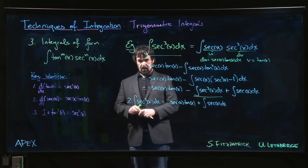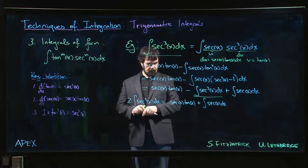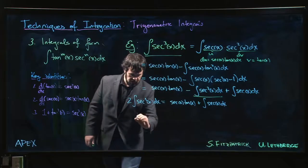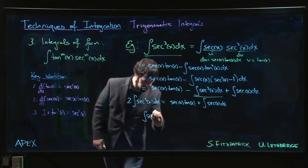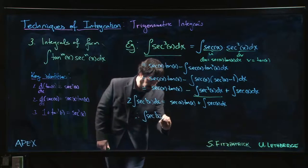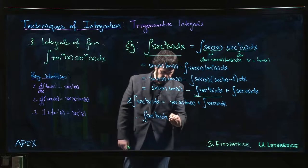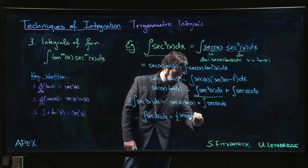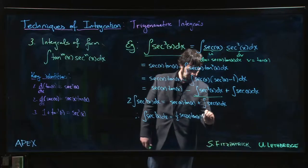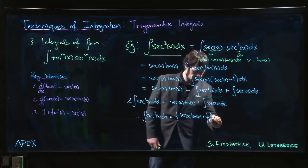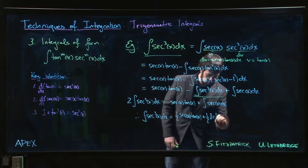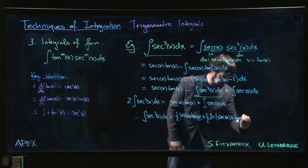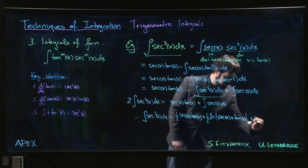We did that one in the substitution section. We saw there was a trick to it, but we know how to do it. All we have to do here is divide by 2 and put in a known result. We get 1/2 secant x tan x plus 1/2 times the natural log of the absolute value of secant x plus tan x plus our constant.